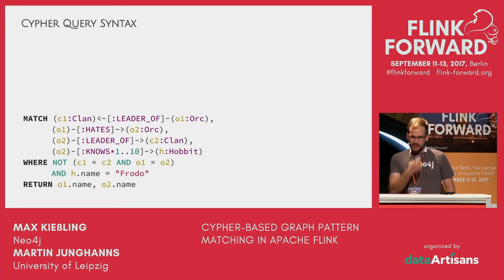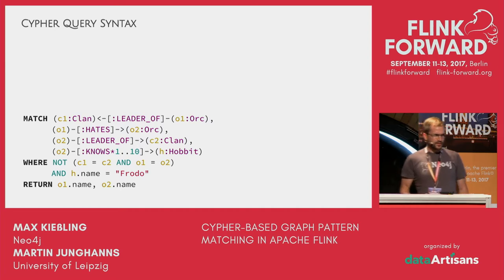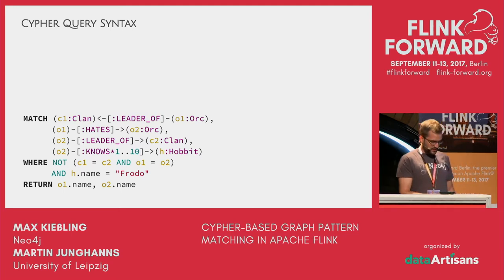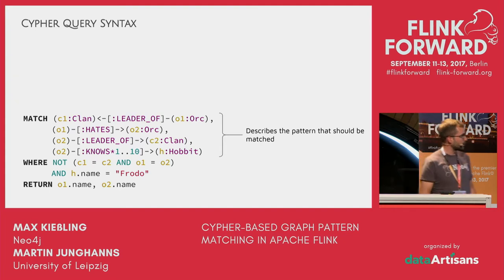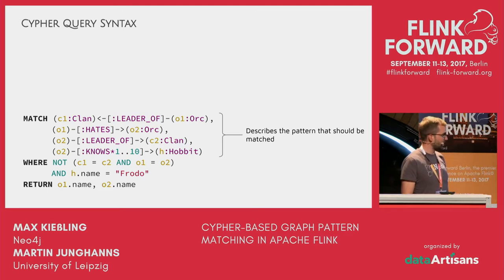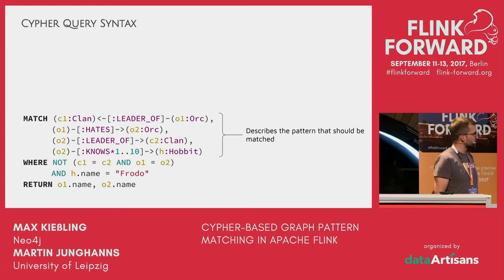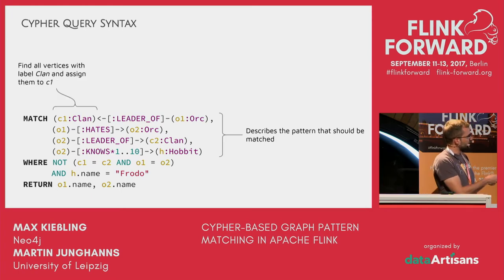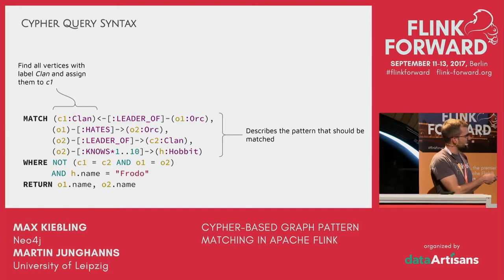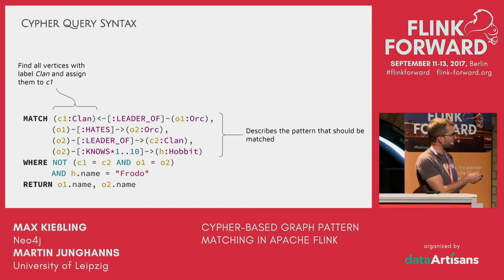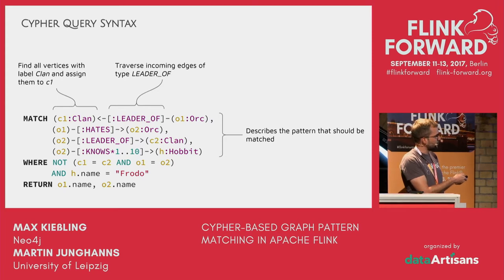Let's get into the syntax — focusing on the core features we implement in our proof of concept. The main feature is the MATCH clause, which describes the pattern you're looking for. We call this ASCII art because you actually draw the pattern: round parentheses denote vertices with a specific label — here the label is 'clan' — assigned to variable c1. You then traverse incoming edges denoted by an arrow with the type leader-of.